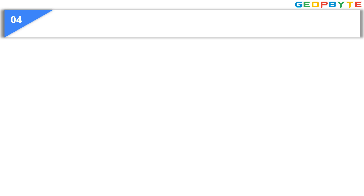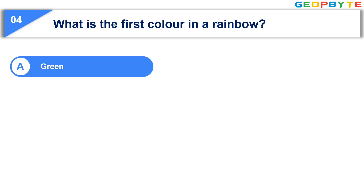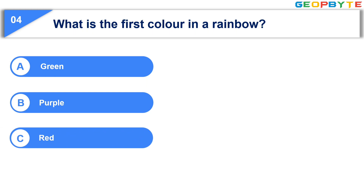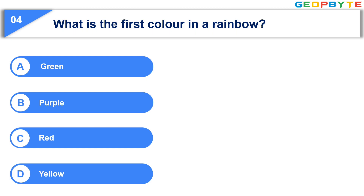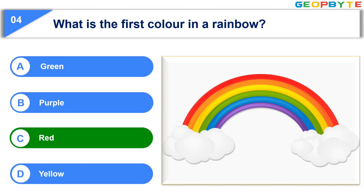The fourth question is: What is the first color in a rainbow? Option A, green. Option B, purple. Option C, red. Option D, yellow. Your time starts now. Your time is up and the correct answer is Option C, red.